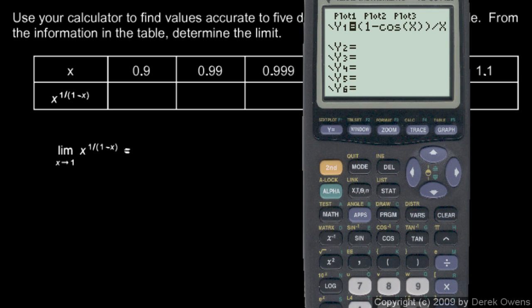So let's pull the calculator back up here and put in this. This is going to be x to the power of, and then you need parentheses here, 1 over, and you need parentheses again, 1 minus x. And then close parentheses, close parentheses. And punch graph.